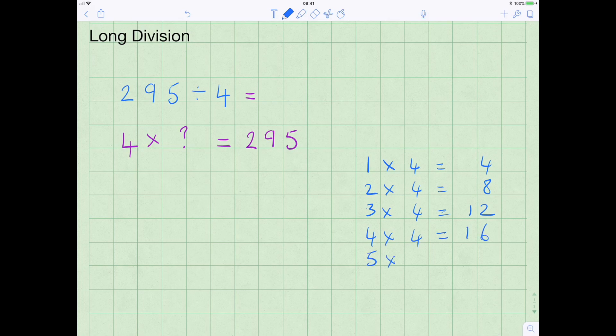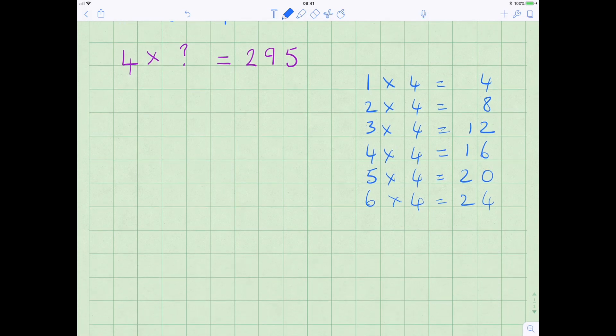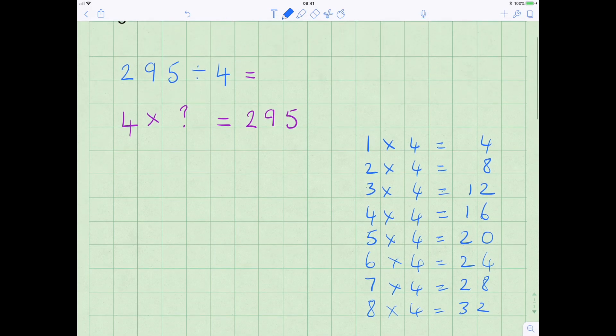5 times 4 equals 20, 6 times 4 equals 24, and 7 times 4 equals 28, and 8 times 4 equals 32. So we're going to set the sum up as we have before, so the 4 is outside the symbol which represents the division, and 295 inside.